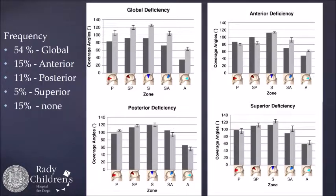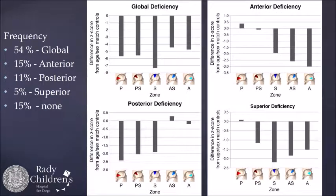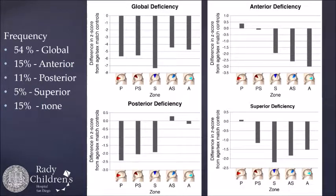The incidence of those deficiency types is shown on the left. Comparing to the Z-score — again, minus 2 to 2 is considered normal, so lower than minus 2 is when these patients are significantly deficient, and those are the quadrants we would have to address with surgery. The globally deficient group shows deficiency in all five quadrants; the anterior group primarily in the three anterior quadrants; and then posterior and superior groups as well.